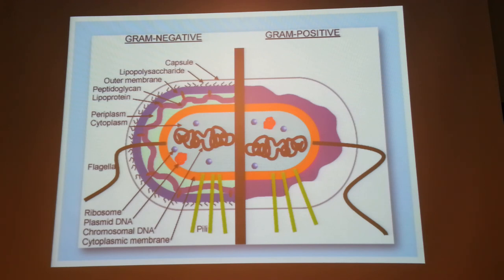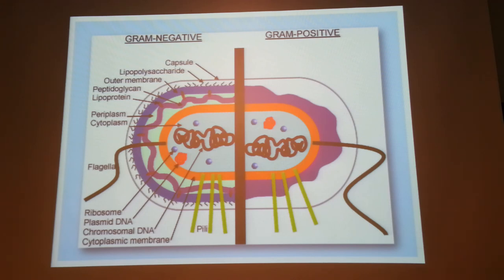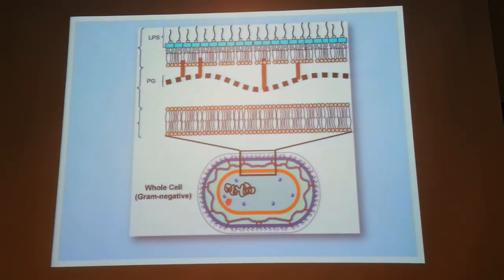The same principle of secretory tags applies to periplasmic targeting. You fuse your protein to what is known as a periplasmic localization signal, or pel tag. PET vectors come with a pel tag built in, so they will express the protein and direct it to the periplasmic space. The protein comes bound to the membrane, which makes it easier to recover.